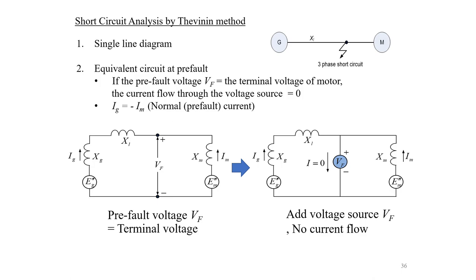We are going to analyze the short circuit using the Thevenin method from the single line diagram. The single line diagram shows a connection between a generator and a motor, and we have assumed a three-phase short circuit somewhere along this line. The first example discussed had the three-phase fault at the terminal of the motor, just as shown in this single line diagram.